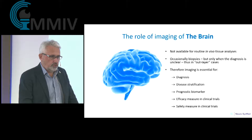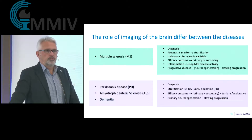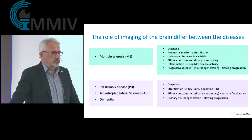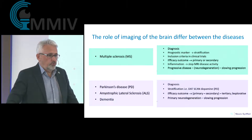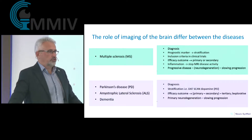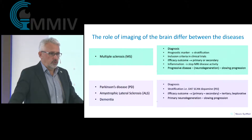The use of imaging differs between our diseases. In multiple sclerosis, it is well established that imaging is used for efficacy endpoints in clinical trials — this has been done for almost 40 years. We use it for diagnosis, as a prognostic marker, for stratification into trials, and often as a definite inclusion criterion. It may serve as a primary outcome in phase two proof-of-concept trials, and at least as a secondary or exploratory tertiary endpoint.